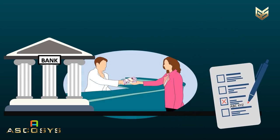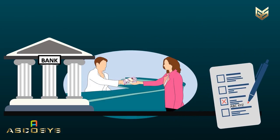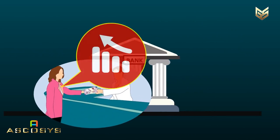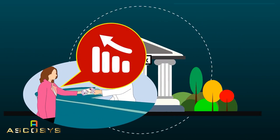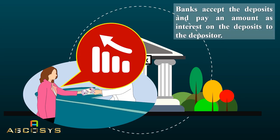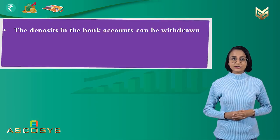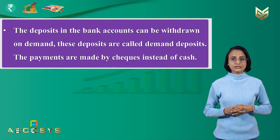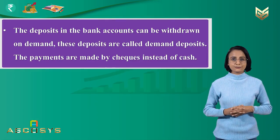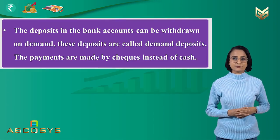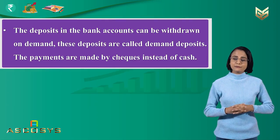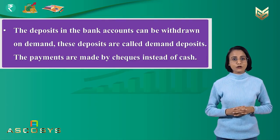People deposit their extra cash with the banks by opening a bank account in their name. Banks accept the deposits and also pay an amount as interest on the deposits to the depositors. These deposits in the bank can be withdrawn on demand, and are known as demand deposits. Payments are made by checks instead of cash.